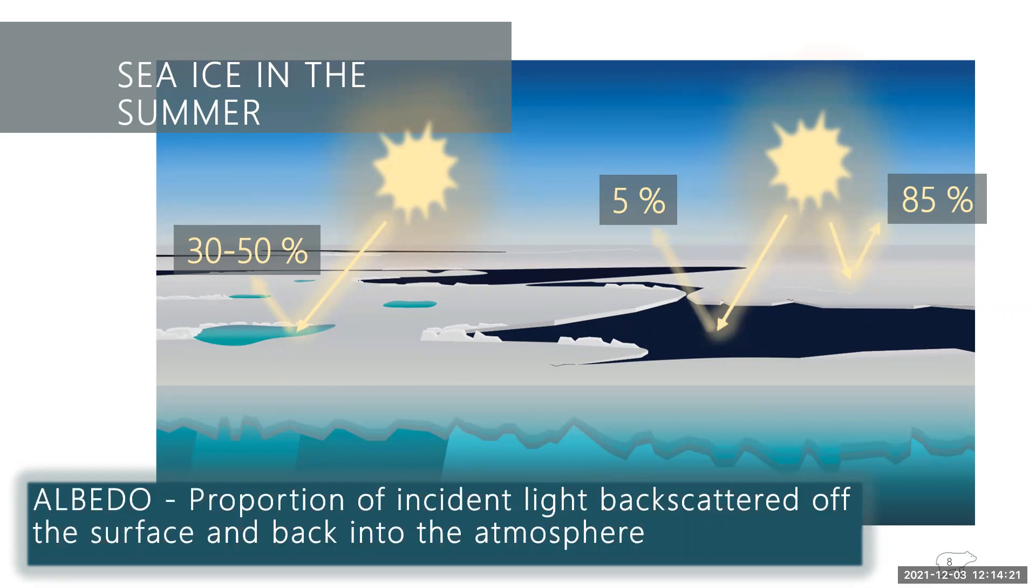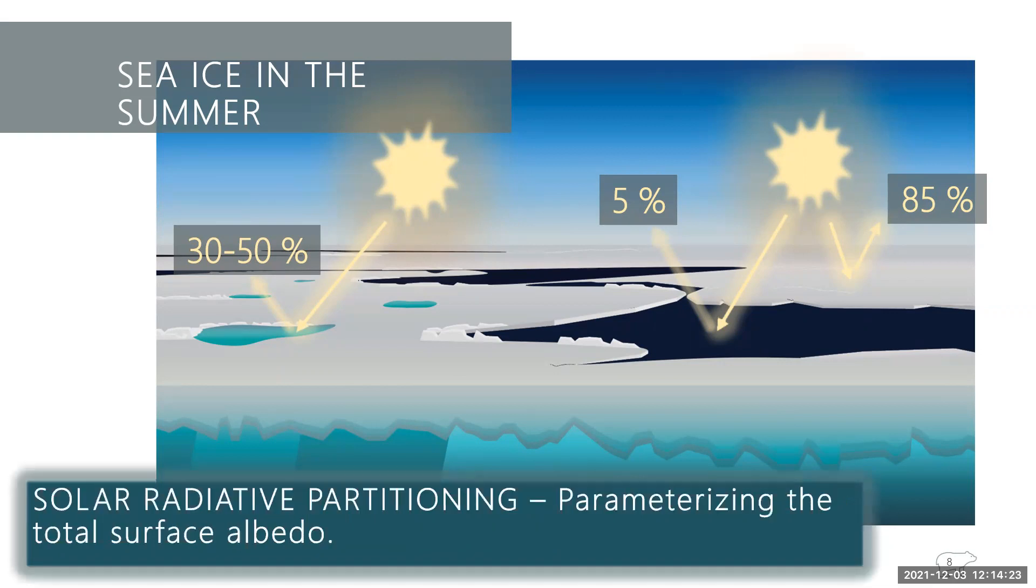And another important term associated with this is solar radiative partitioning. And it's a way to parameterize the total surface albedo in a given area. And it describes how incoming solar radiation is partitioned or divided up into the various pathways where it enters the upper ocean. And it also describes how heat is deposited in the upper ocean, which is important in understanding how sea ice changes each summer.